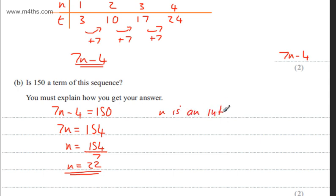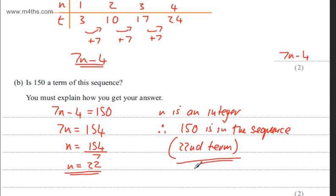So n is an integer. Therefore, one hundred and fifty is in the sequence, and I'm even going to write that it's the twenty-second term. We don't need to, but I'm just going to state that anyway. So twenty-second term. So all I've done is solve the equation and shown that n is an integer.